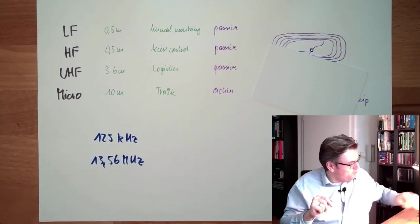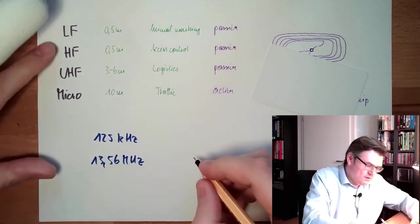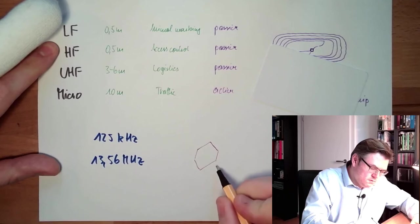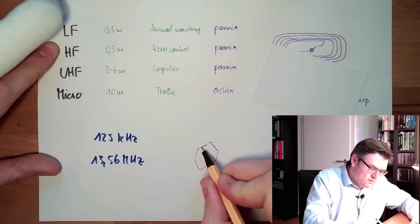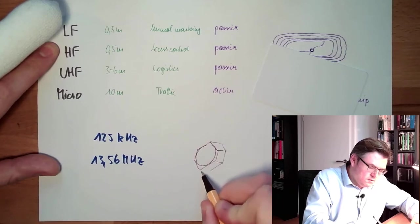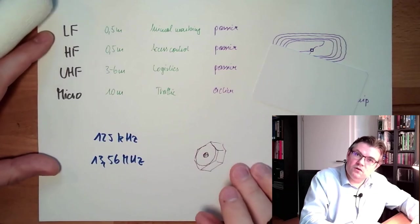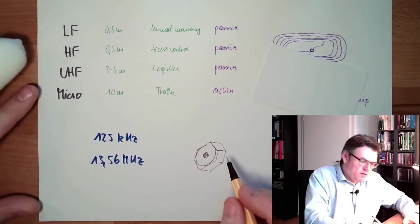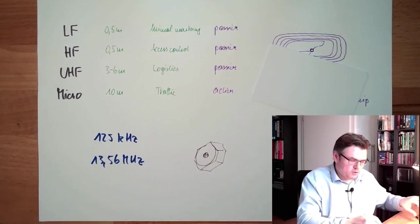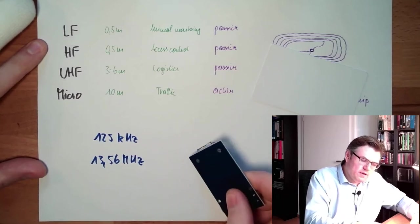However, there are for instance hexagon screw heads. And in there, there's a transponder inserted. You know, this metal around there, this is damping the field pretty much. So the field, you really have to get close with your reader to read this out.